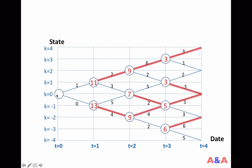Finally, at date 0, given initial state 0, you would choose to go down to get 13. The maximum value you can achieve is 13, and the optimal policy that achieves 13 is down, down, up, up. This is a much easier approach than trying all 16 possible routes.